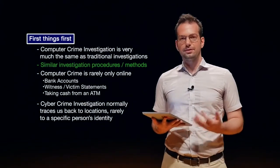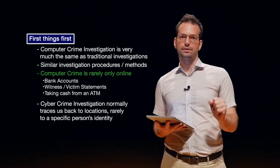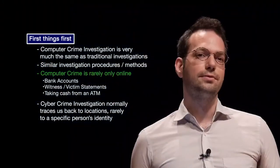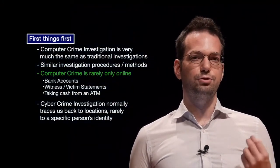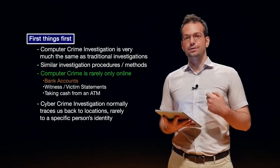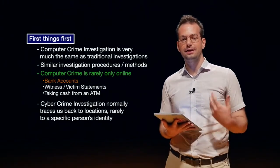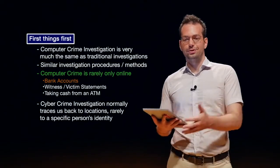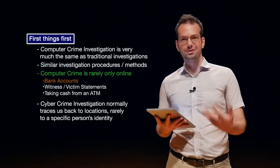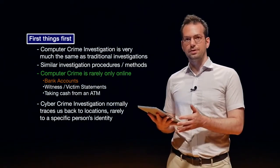Computer crime rarely happens only online. There are some types of crimes that only happen online without many offline or physical traces, but most types of cybercrime have some sort of traditional or offline component. For example, with bank accounts, criminals can do bank transfers, but they normally want to take the money out of the bank eventually. So they're taking what may have been a completely online crime and converting it into the physical world, at which stage we can start to do a traditional or physical investigation.